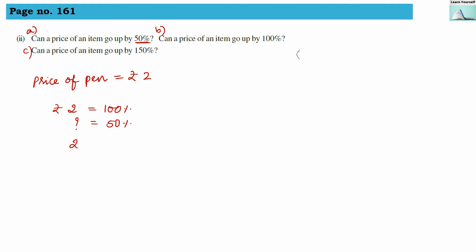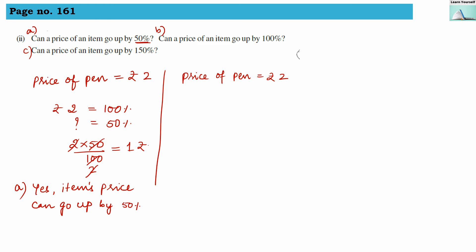If 2 rupees is 100%, then 50% will be 2 × 50 ÷ 100, which gives us 1 rupee. So when the price increases by 1 rupee, that is a 50% hike. When the price becomes 3 rupees, it is a 50% hike. So yes, for question a, the item price can go up by 50%.